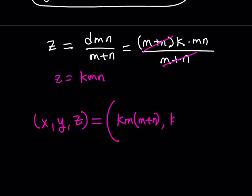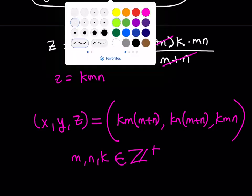comma kn times m plus n, comma kmn. And m and n and k are all positive integers. So basically, this brings us to the end of this video. I hope you enjoyed it.